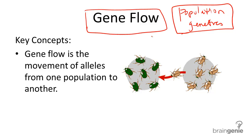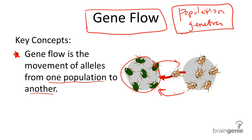One very important condition for evolution to occur is gene flow. Gene flow is the movement of alleles from one population to another. For example, take this population of beetles here. If these two populations of beetles were completely isolated from one another, there would potentially be one less factor propelling evolution forward — they would maintain the same genes they had previously.